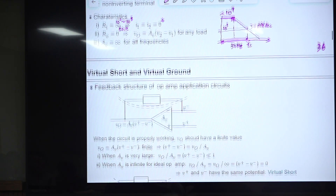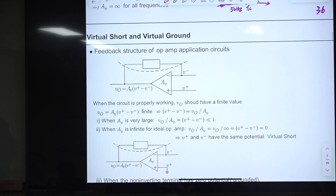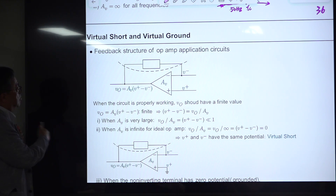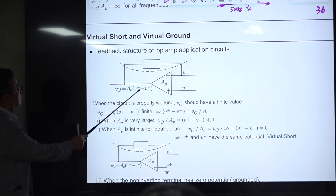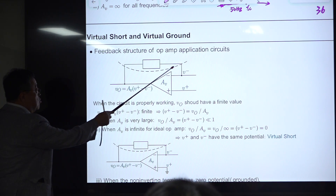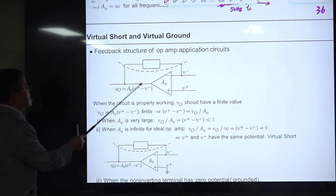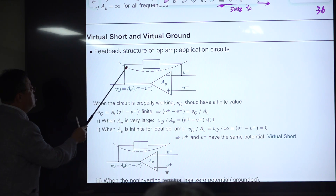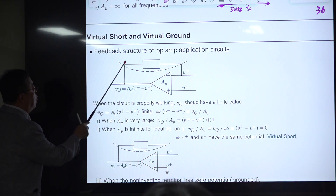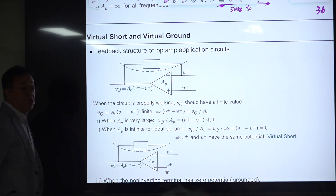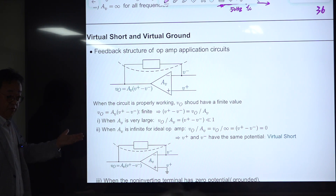In steady state, all AC variables die out and only DC remains. Therefore we only need to consider the magnitude at DC, which means omega = 0. The condition for DC regulation is that the loop gain magnitude at DC must be infinite — meaning at least one integrator must exist in the feedback path.